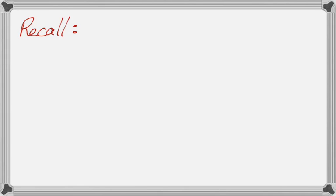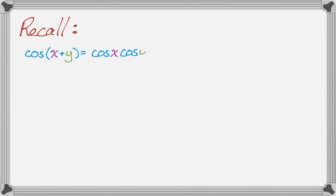What we need to remember are the sum and difference formulas for both sine and cosine. Starting with cosine: cosine of x plus y equals cosine x cosine y minus sine x sine y. When you're dealing with cosine, the signs alternate, so cosine of x plus y gives a minus in the formula.